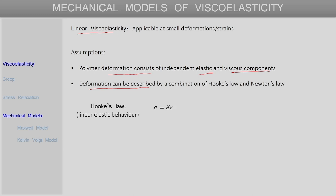Hooke's law simply relates the stress to the strain through a linear relationship. Hooke's law states that stress is proportional to strain, and this proportionality constant E is referred to as the elastic modulus. If the stress and strain we are talking about are tensile, E will be Young's modulus. If we are talking about shear stress or shear strain, then even in that case a Hooke's law linearly relates shear stress and shear strain, and the elastic modulus will be the shear modulus.